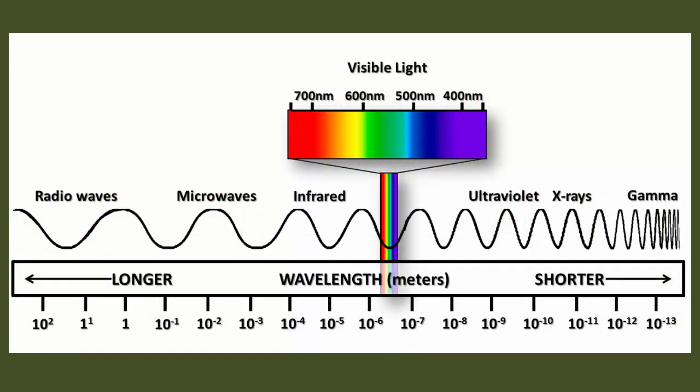This is the electromagnetic scale. You'll notice that visible light happens to be on this scale with radio waves, microwaves, infrared, ultraviolet, x-rays, and gamma rays.